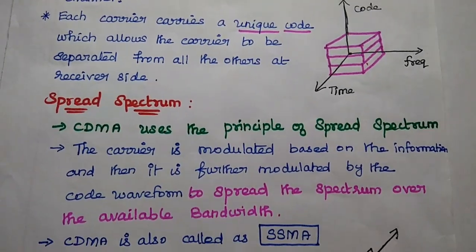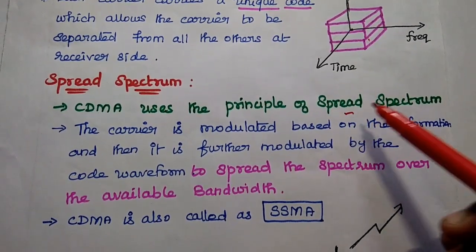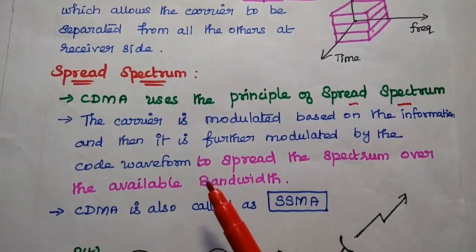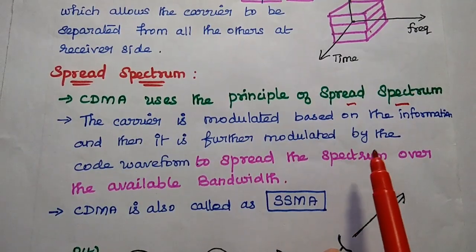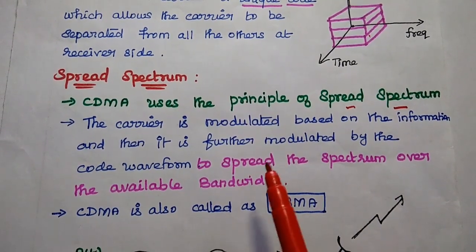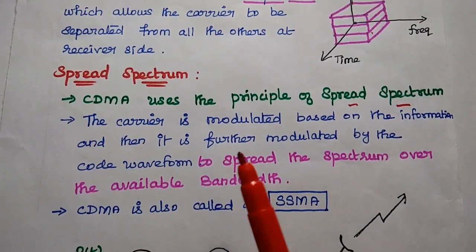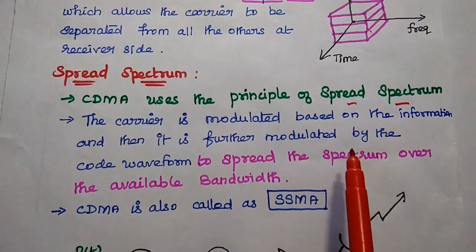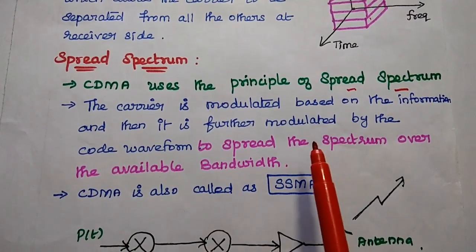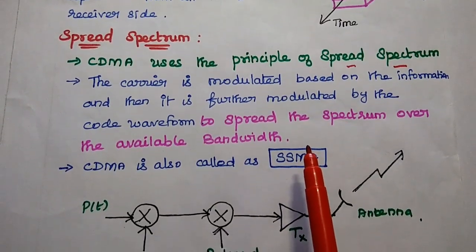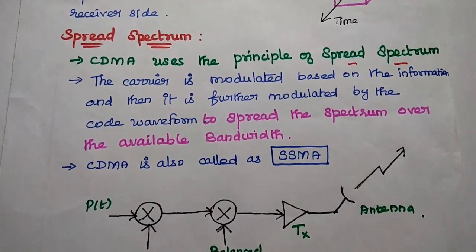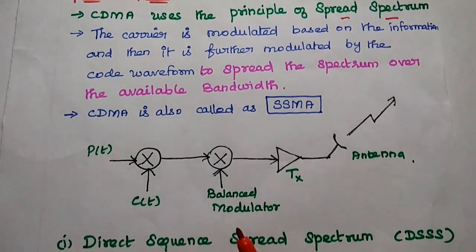CDMA uses the principle of spread spectrum. Spread spectrum means spreading the frequency range. In general communication, the carrier is modulated according to the information. But in CDMA, the carrier is modulated based on the information and then further modulated by the code waveform to spread the spectrum over the available bandwidth. That is why it is called spread spectrum, and CDMA is also called SSMA — Spread Spectrum Multiple Access.